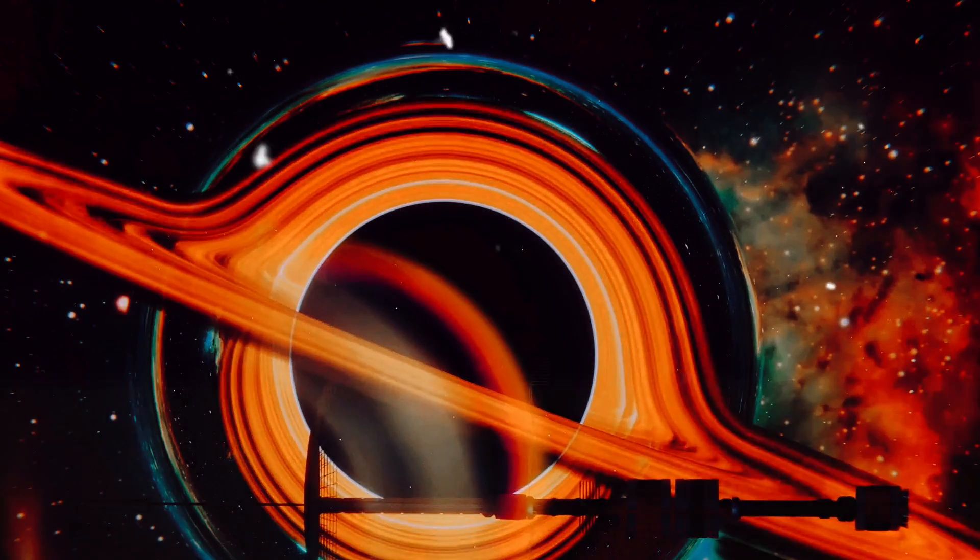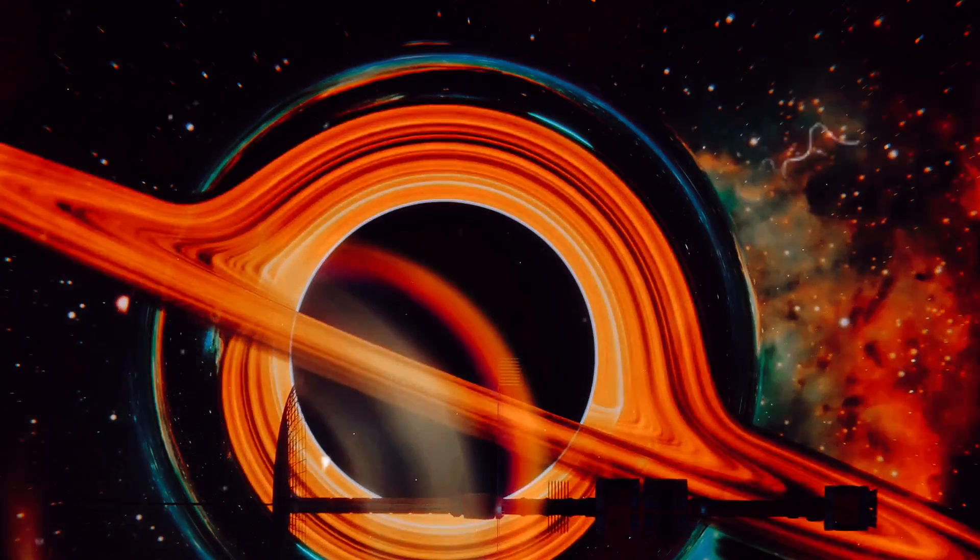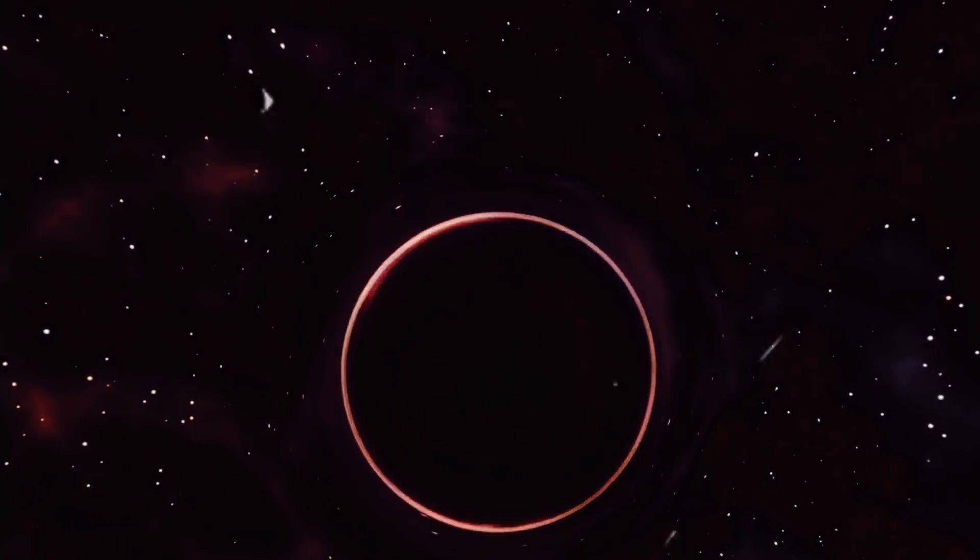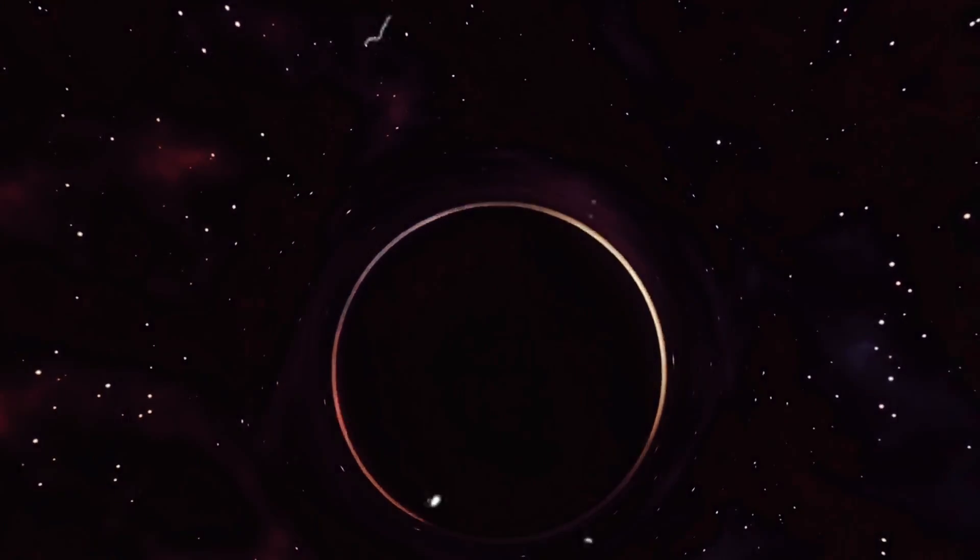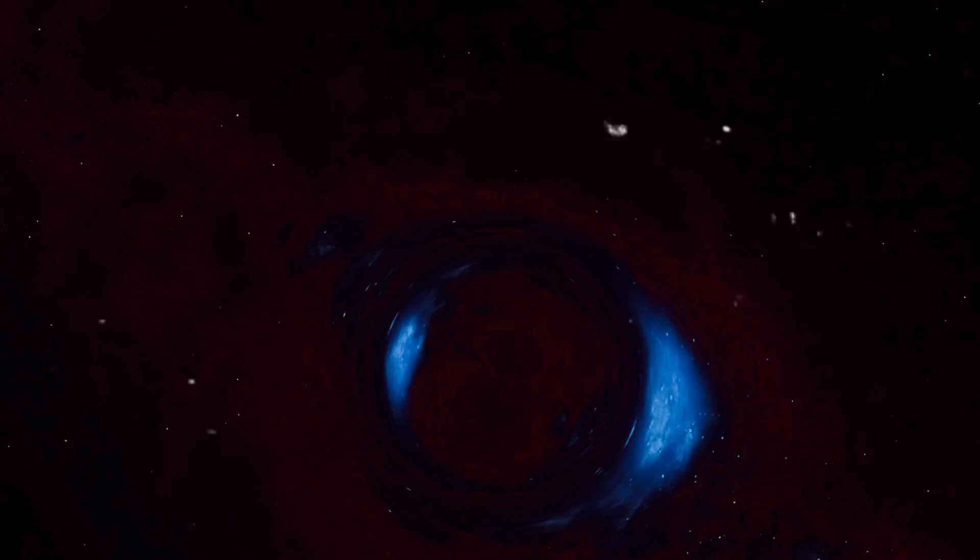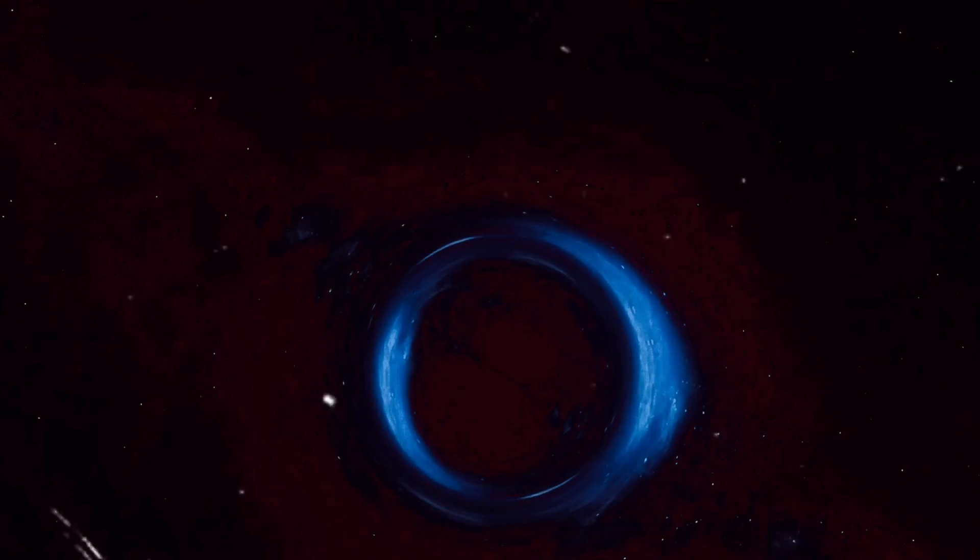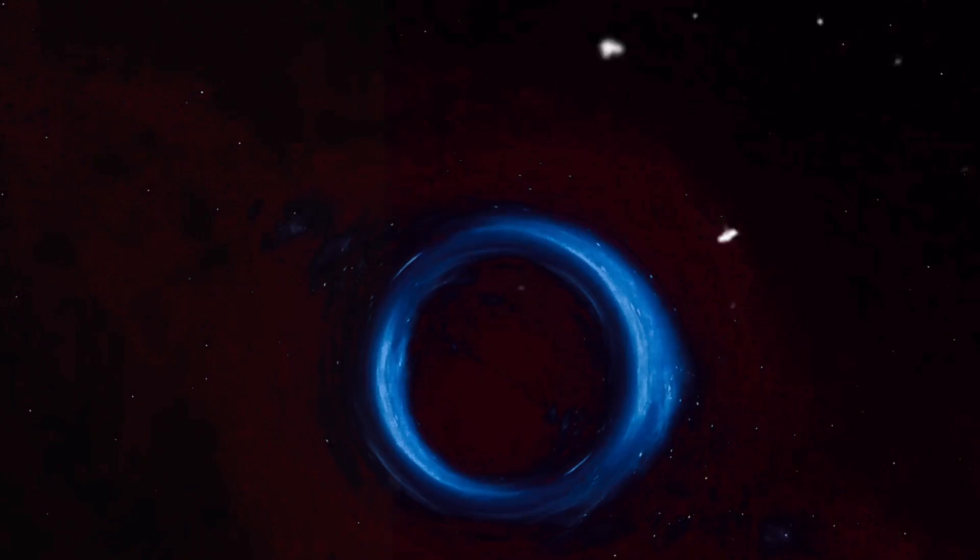Unlike most planets we know of that orbit stars, planet has a different celestial partner. It orbits a black hole, a region of space where gravity is so strong that everything is pulled towards it. But what's even more remarkable is how planet manages to survive this gravitational pull, maintaining an orbit that doesn't send it spiraling into the black hole's abyss.